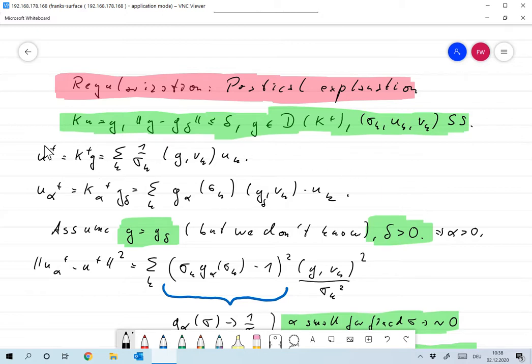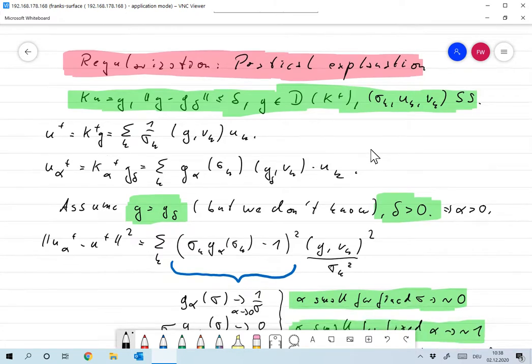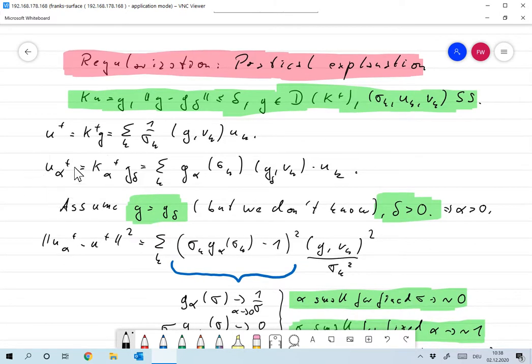In that case we can define the minimum norm solution u plus. We already did it and u alpha plus is a regularization defined by the regularization functions g alpha of sigma.